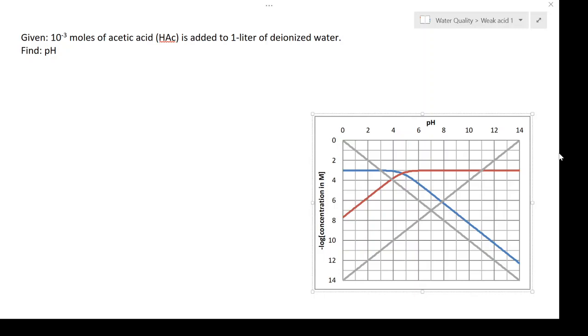In this example we have acetic acid, which is a weak acid, and we have 10 to the minus 3 moles being added to a liter of deionized water, and we want to find the pH of that solution.